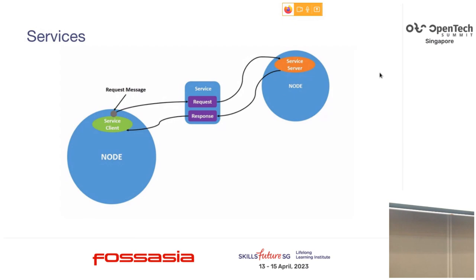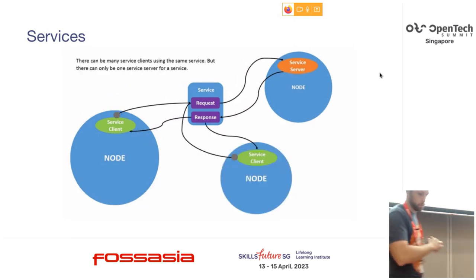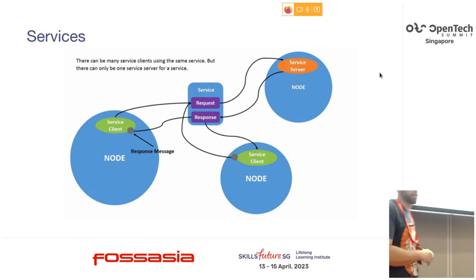Services are basically like RPCs — calling a function in another node. For example, instead of having the camera publish images all the time, you use a service to say 'give me an image now' and you get a response. It's a different way of communicating. Multiple nodes can also request the same service, and the service provider answers each one.